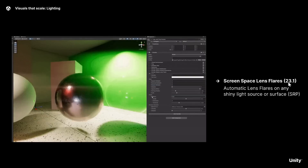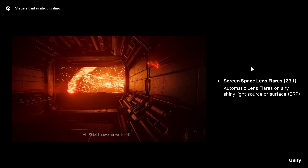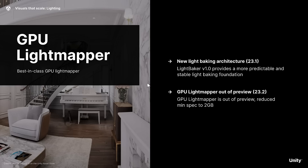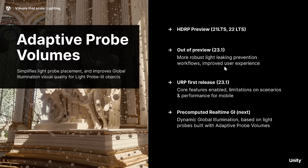In 23.1, you're getting screen space lens flares — automatic lens flares on any shiny surface or light source. There's also a new light baking architecture with a 1.0 release in 23.1, providing a more predictable and stable light baking foundation. In 23.2, it comes out of preview, reduces the minimum spec to 2.2 gigabytes, and provides adaptive probe volumes, more robust light leaking prevention, improved workflows, and an improved user interface. There will also be core features enabling limitations on scenarios and performance for mobile, and pre-computed real-time GI.